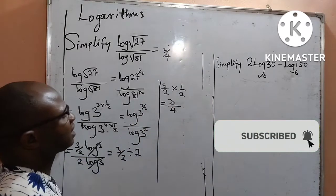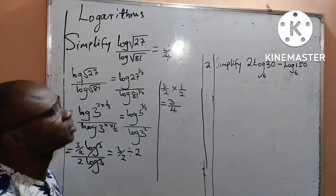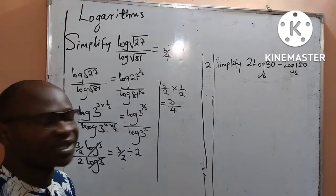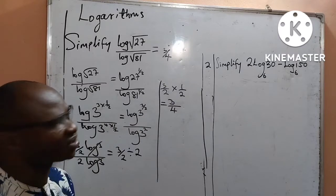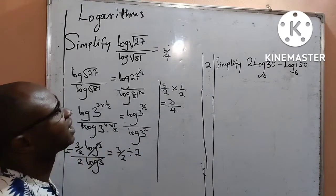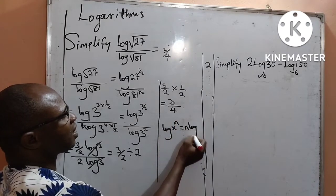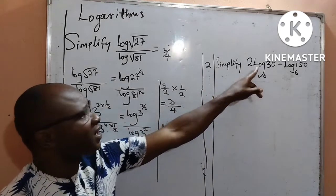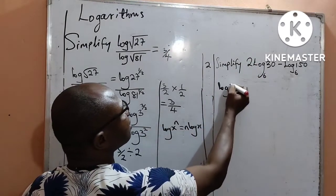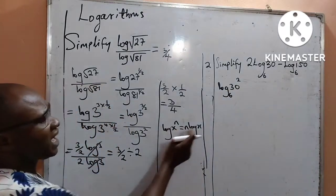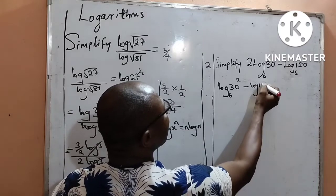Now, in the next 60 seconds, we shall solve the second question. I am asked to simplify 2 log base 6 of 30, minus log base 6 of 150. Let us dive in. The same power law I used before — where log x raised to power n equals n log x — I will apply it here. That means the 2 at the front will move to become the exponent, so I can now have log base 6 of 30 raised to power 2, minus log base 6 of 150.